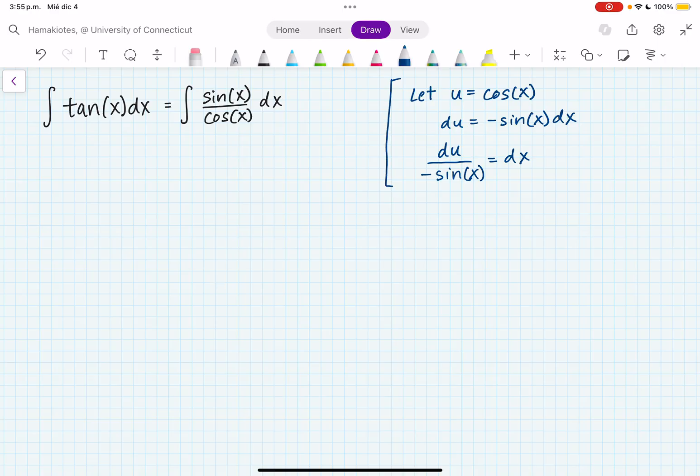So now let's use this u-substitution to rewrite this integral. So this becomes the integral of, let's just keep sine of x up there for now, over cosine of x, which is u, times dx, which is du over minus sine of x.